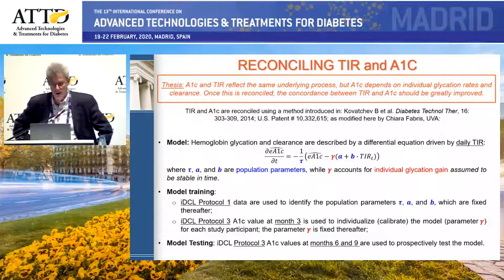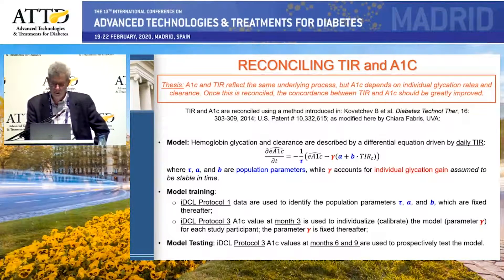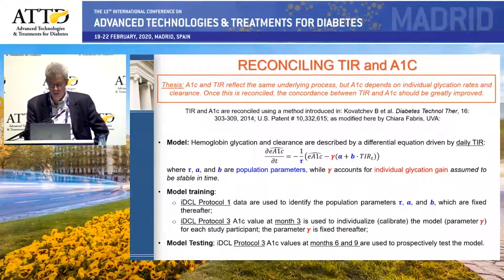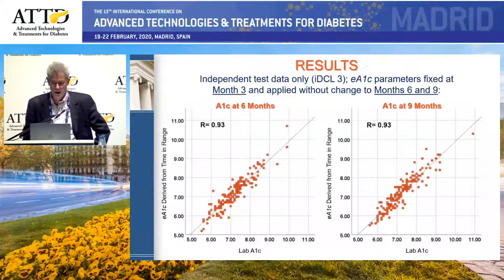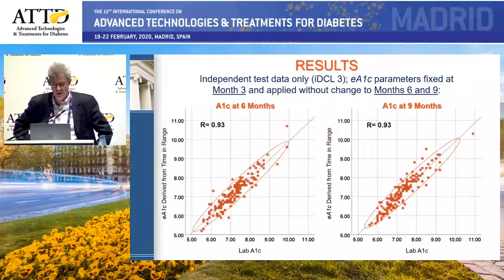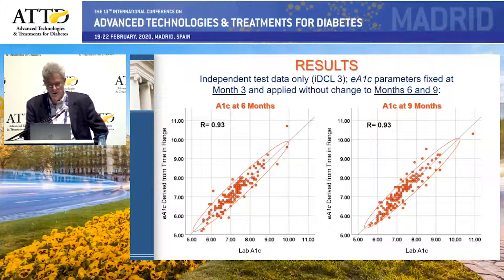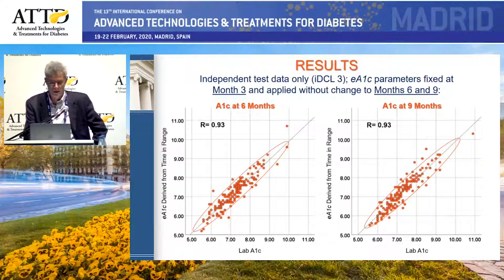Other researchers have looked at this, and to a large extent much of it seems like it could be explained by differences in red blood cell lifespan between individuals, or something else non-glycemic affecting the A1C. In essence, what was done is they corrected the time in range to make it more approximate to explain this discrepancy with the actual A1C. When they do that, the distribution tightens considerably, with the correlation going from about 0.75 or 0.8 up to above 0.93.